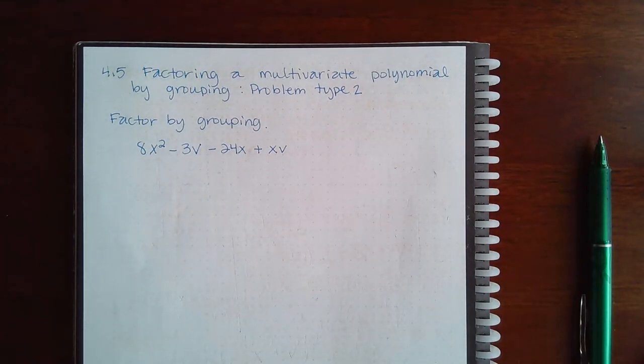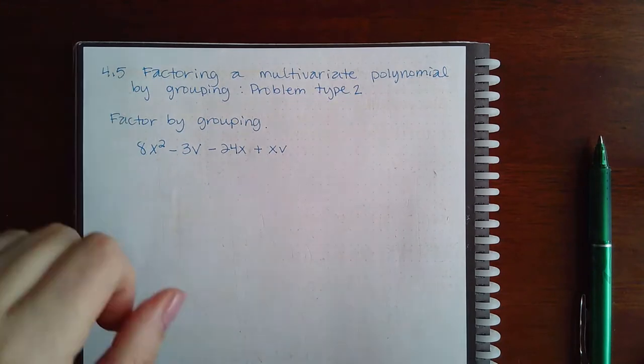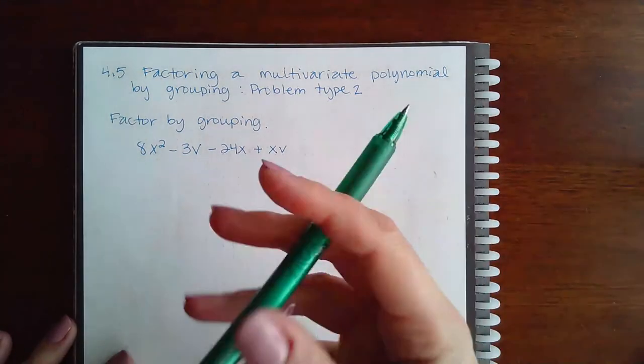Okay, here we are for factoring a multivariant polynomial by grouping—problem type 2 from topic 4.5. Now the issue with this topic is that when I cut it in half...